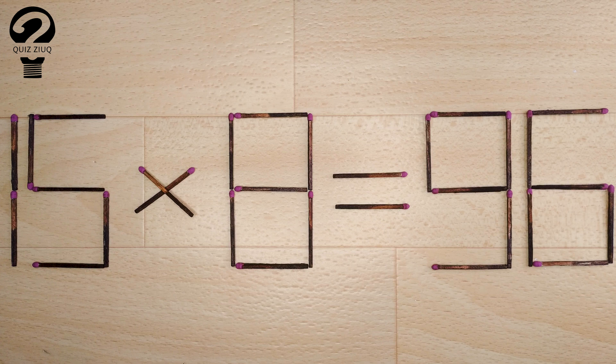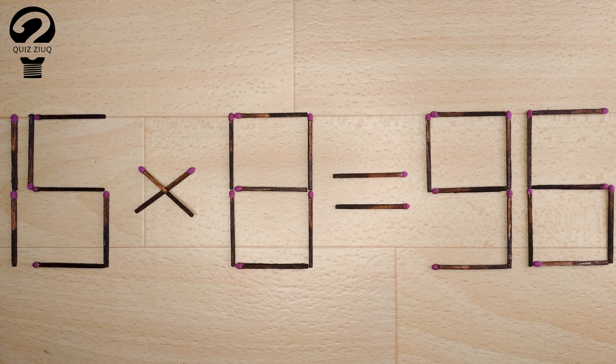Our equation is incorrect. We need to move one matchstick to make our equation correct. This is a fairly simple math problem that both children and adults can easily solve.